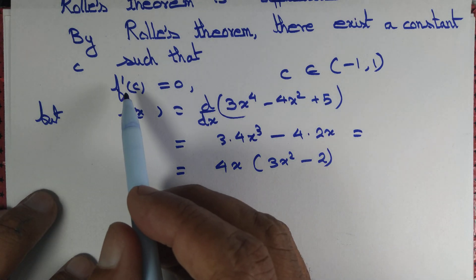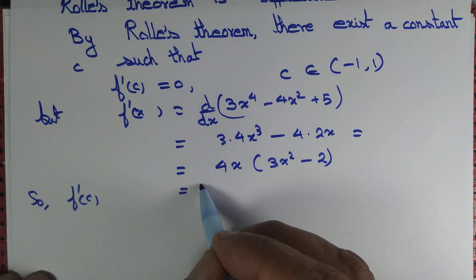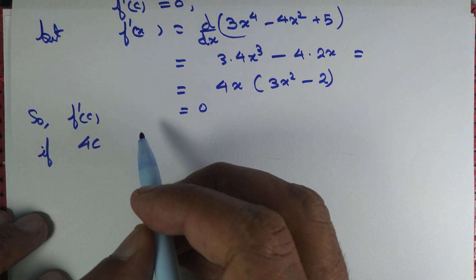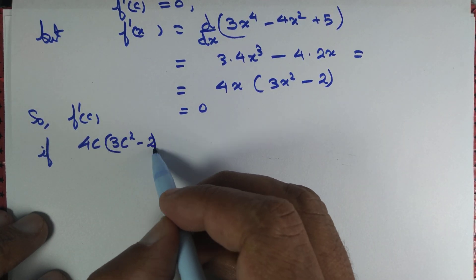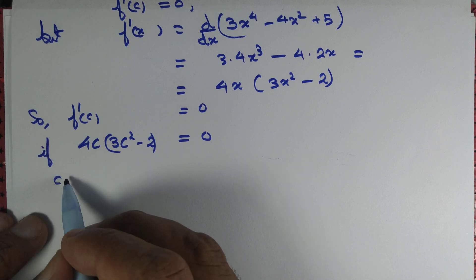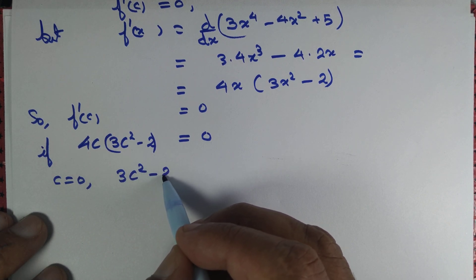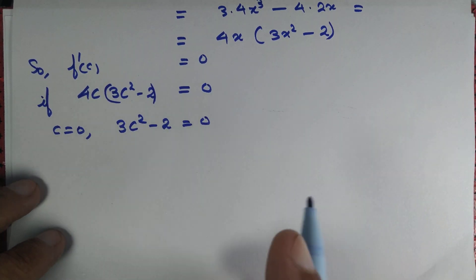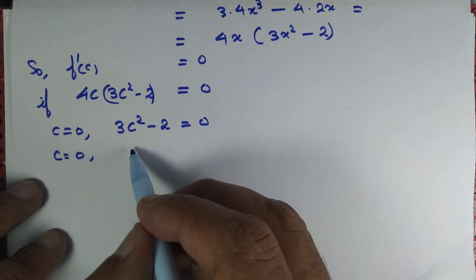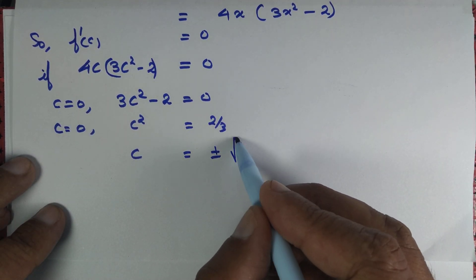We want f'(c) = 0. Substituting c for x: 4c(3c² - 2) = 0. Since the product of two numbers is zero, one of them must be zero. So either c = 0, or 3c² - 2 = 0, which gives c² = 2/3, so c = ±√(2/3).